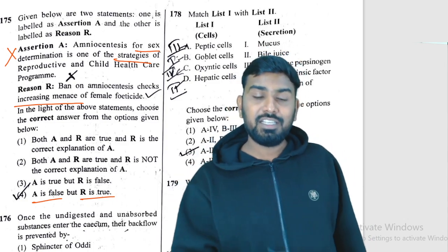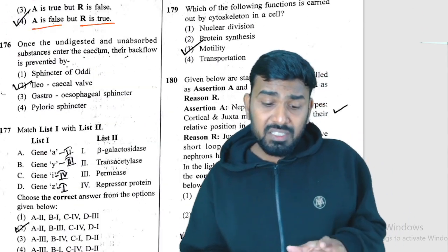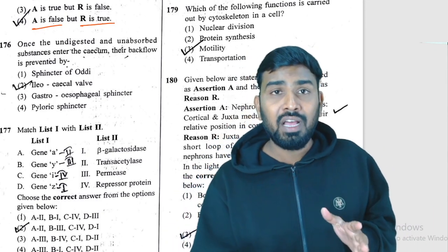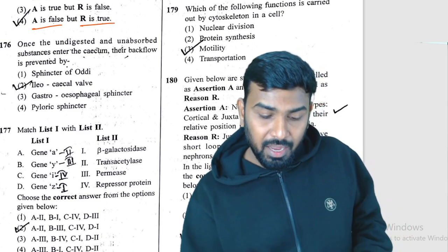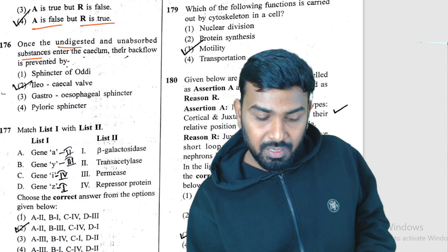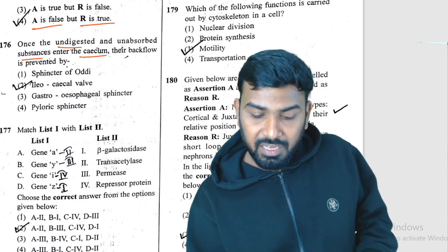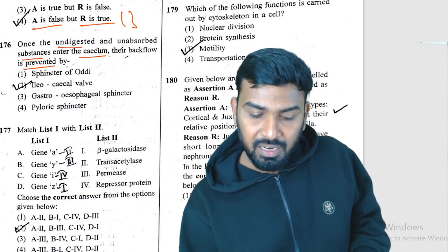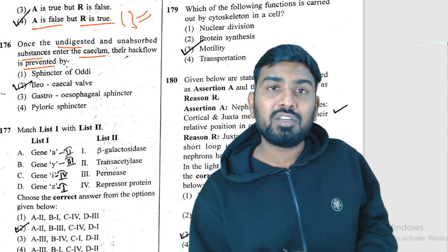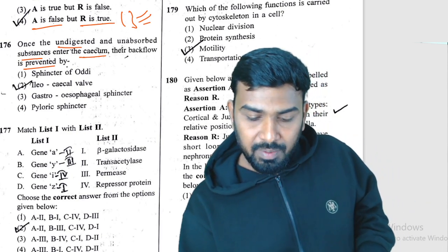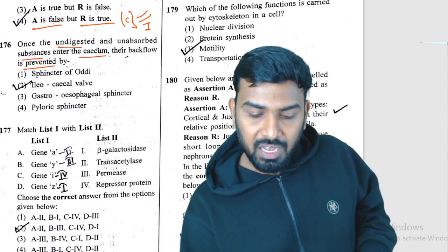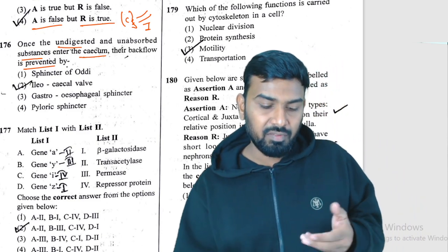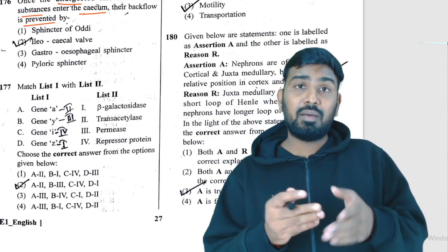Question 176 is a repeated question. The ileocecal valve: undigested and unabsorbed food from the small intestine enters the cecum, and backflow is prevented by the ileocecal valve — the sphincter between the ileum (last part of small intestine) and the cecum. Direct answer.